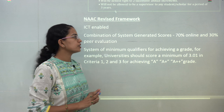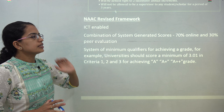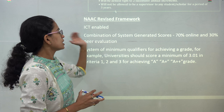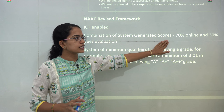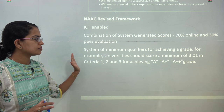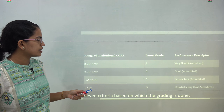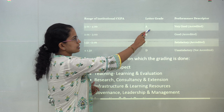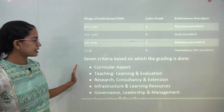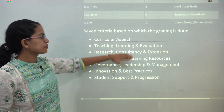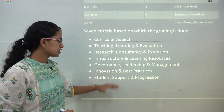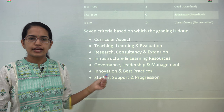The NAAC revised framework is the body that rates educational institutions, and its parameters have been revised. It is now a collaboration of system-generated scores at 70 percent online and 30 percent peer evaluation. A minimum grade of 3.01 is required for criteria 1, 2, and 3. A score of 3 and above is Grade A — very good performance. The seven criteria considered by NAAC are: curriculum, teaching levels, research levels, infrastructure facilities, governance and campus, innovations, and student support.